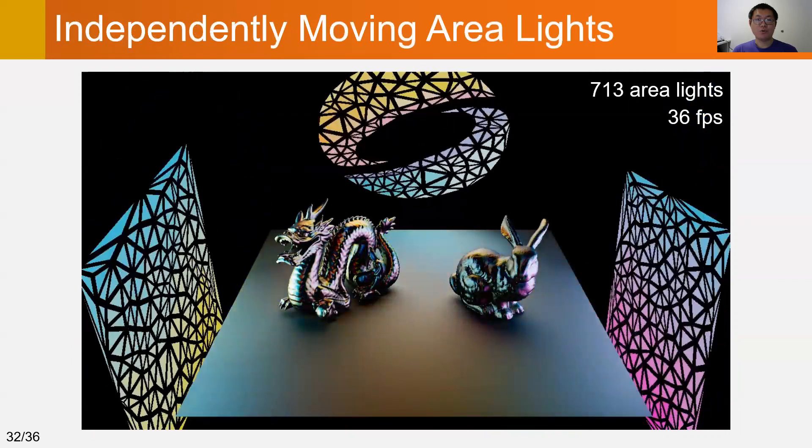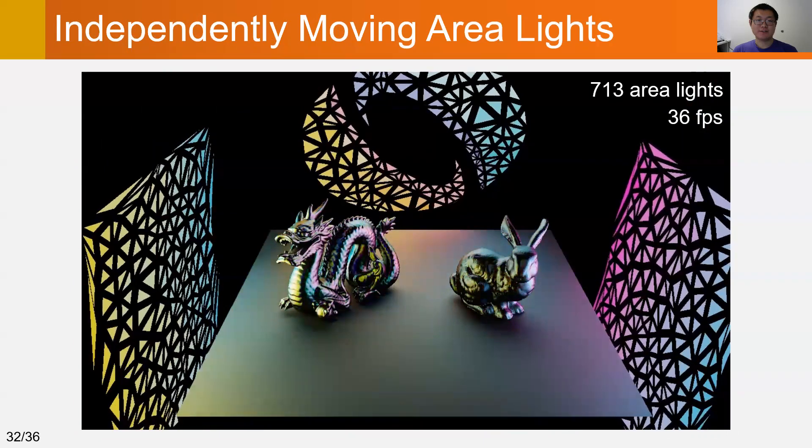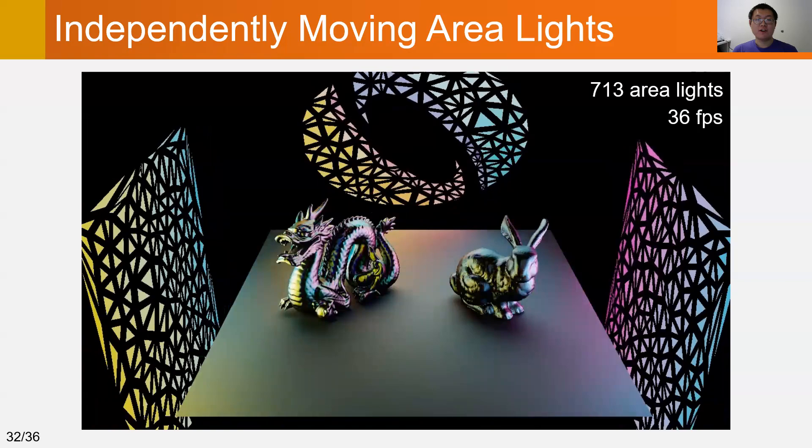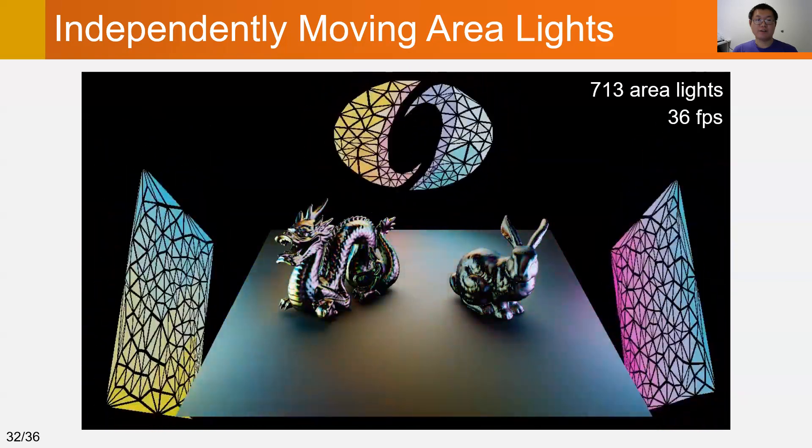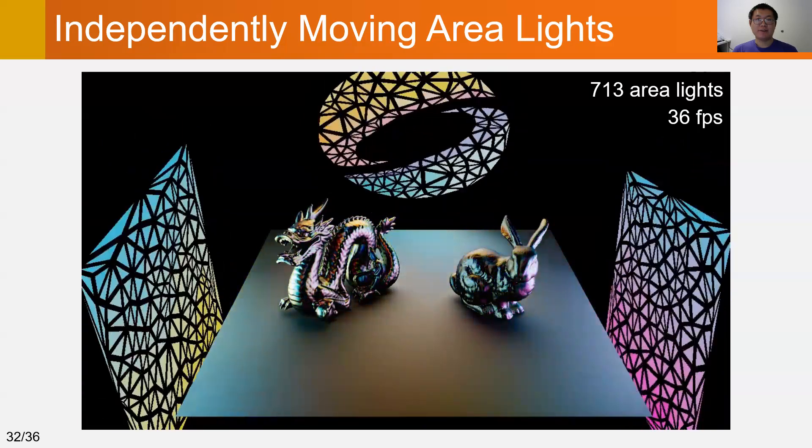In this example, we show a scene rendered by three textured lights. These textured lights are made up of 713 uniform area lights, and each of them is allowed to move independently.